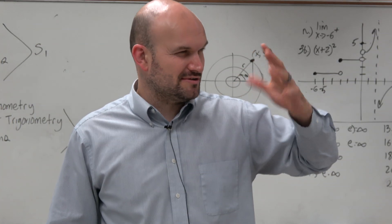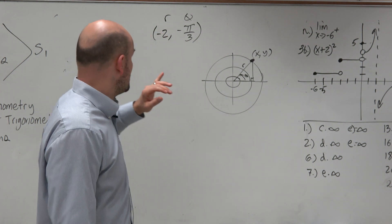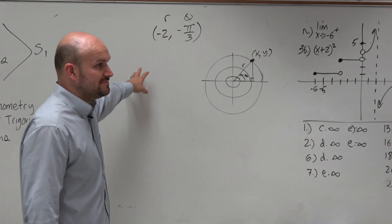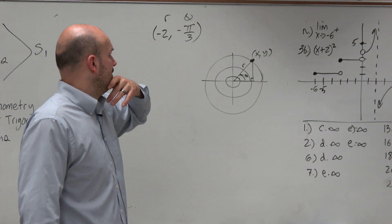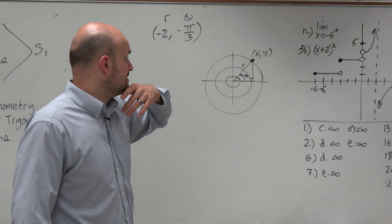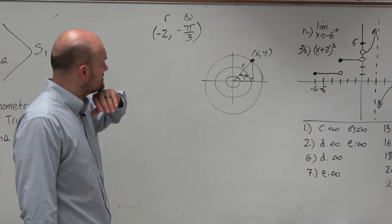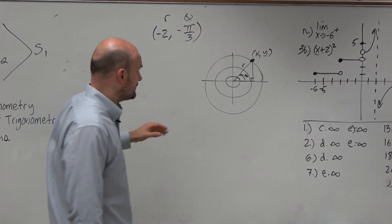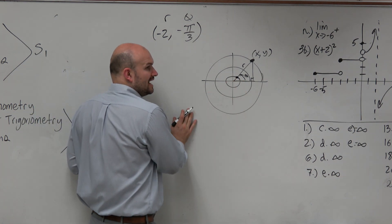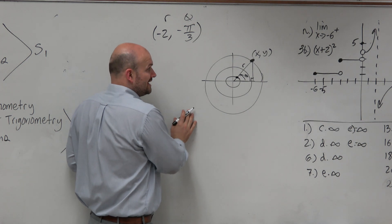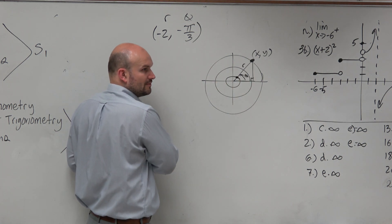Remember, r was negative — and I know that was a tricky part. That is going to be the angle that we're going to represent it. Now we just need to represent this in rectangular form. And what we found was the conversion is this: if we can figure out what the point is on the unit circle, then we just multiply it by r to get it to whatever the regular point is.